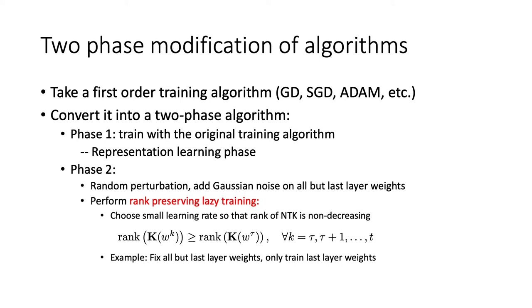In the second phase, you do a random perturbation to add Gaussian noise on all but the last layer weights. Then you perform so-called rank-preserving lazy training. It is a generalization of the previous NTK regime training, where you need to choose a small enough learning rate so that you guarantee the rank of NTK does not decrease over time. This is a more relaxed condition that includes the NTK training, where it practically doesn't change the kernel. A special case of this is if you fix all the rest of the layers and only train the last layer in the second phase.